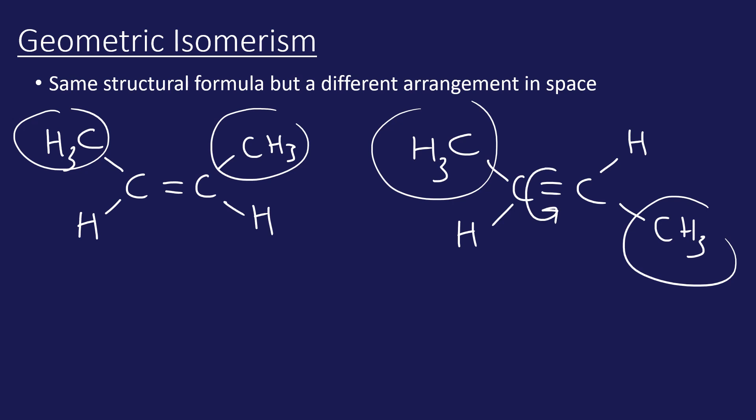Because we don't get free rotation, this can't just rotate and be the same as the other one. They are definitely different - they are classed as geometric isomers. They have the same structural formula, which in this case is CH3CH=CHCH3. If we were to make these with molecular models, they are non-superimposable - they have a different arrangement in space.